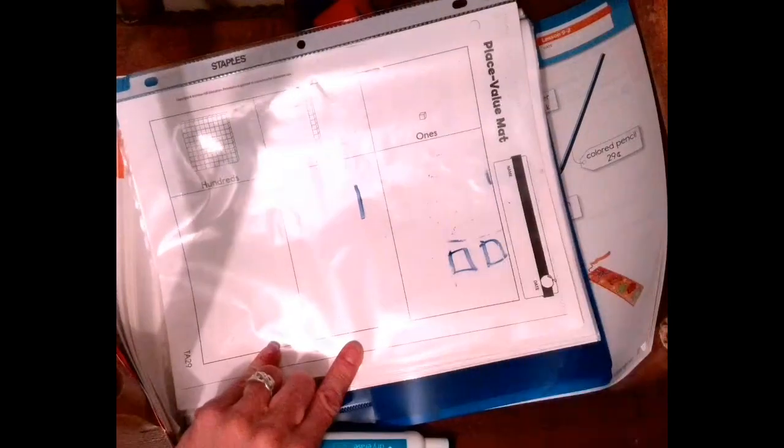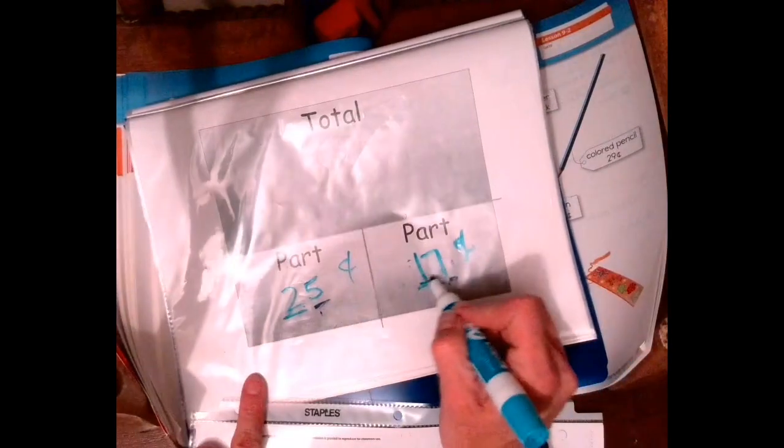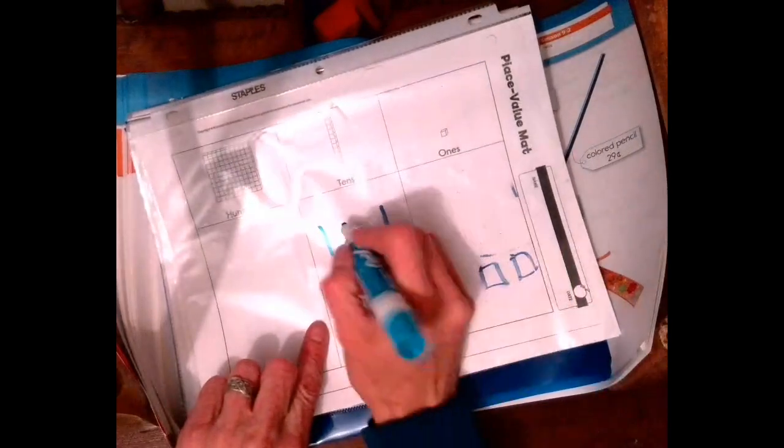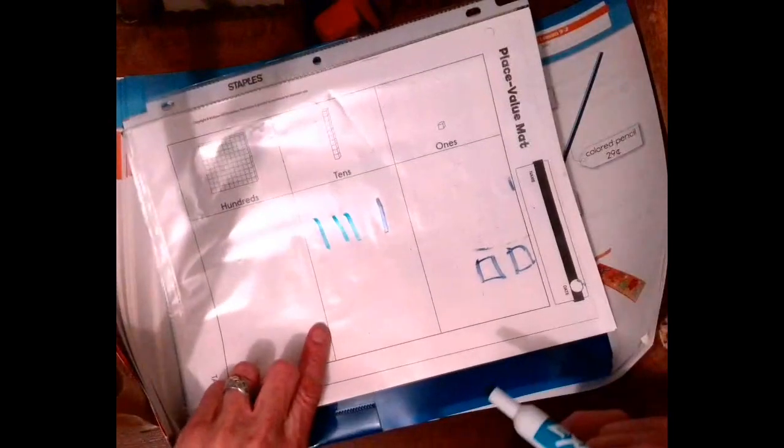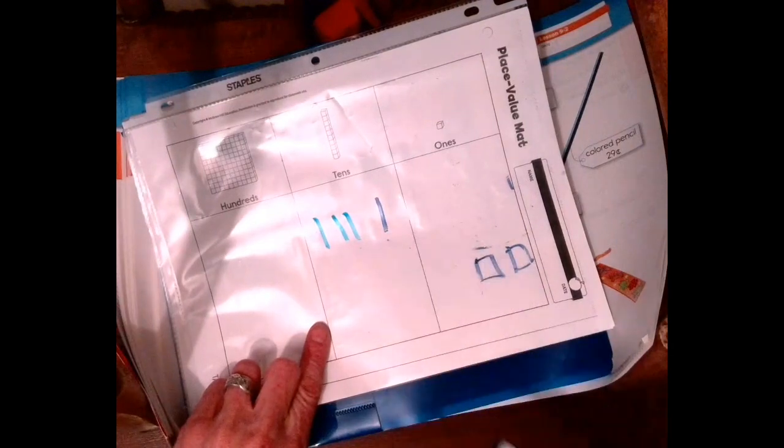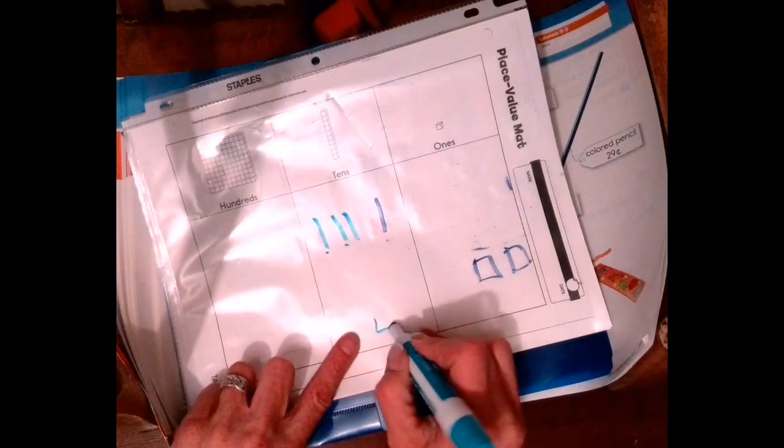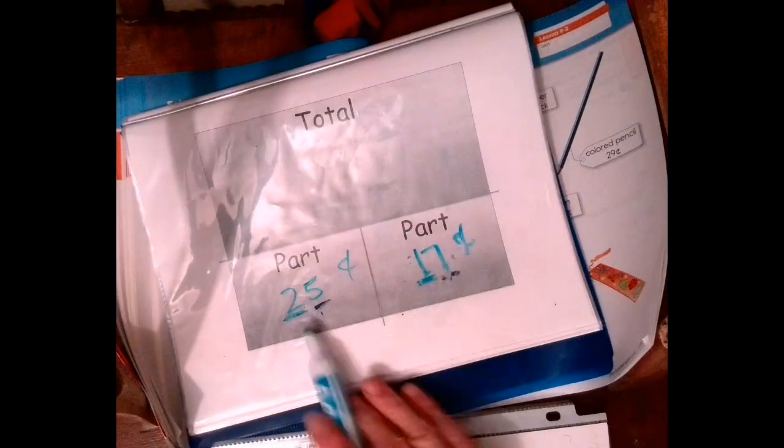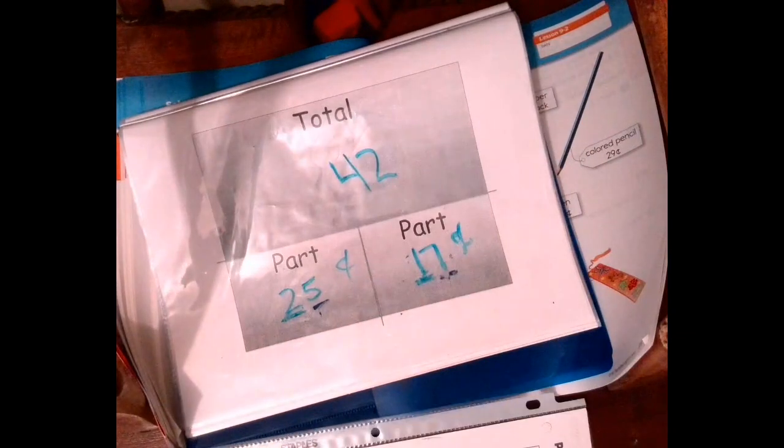We're going to erase those and we have two left over. Now we have to go to our tens place value. We've got a one here and a two here, so we're going to have one and two, one group of ten, two groups of ten, so a total of three. But we have this one from over here, so our answer, our total, is going to be 10, 20, 30, 40, and we have two cubes left over. So 42. So 25 plus 17 equals 42.